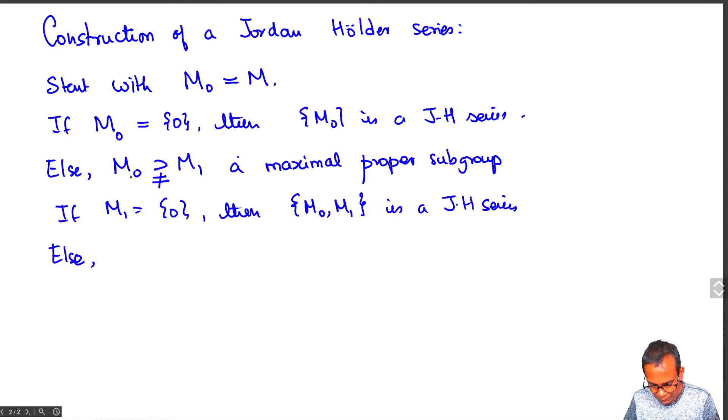Otherwise, note that M1 must also satisfy the ascending chain condition. It inherits it from M0 because every sequence of submodules of M1 is also a sequence of submodules of M0. So M1 again satisfies the ascending chain condition, so M1 contains M2, a maximal proper subgroup.